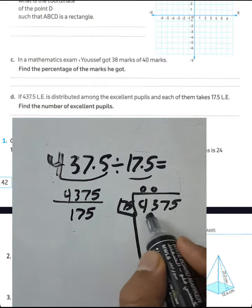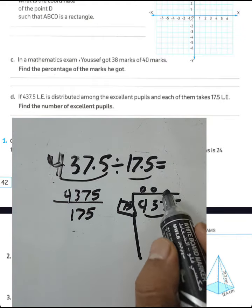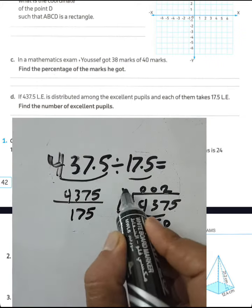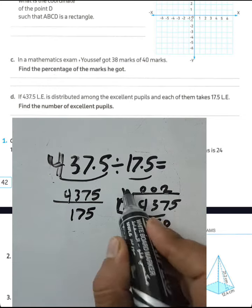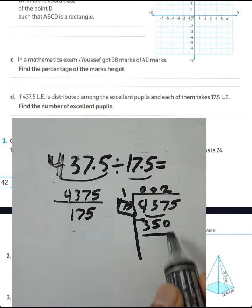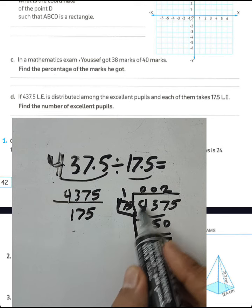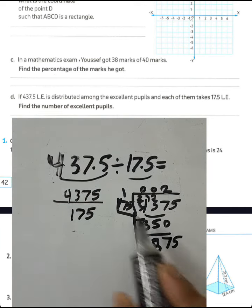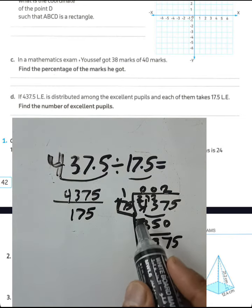Write double zero, and then you can write here 2. 2 times 5 equals 10, 0 and carry 1. 2 times 7 is 14 plus 1 equals 15, 5 and carry 1. 2 times 1 equals 2 plus 1 equals 3. Find the difference: 7 minus 0 equals 7, 13 minus 5 equals 8, and drop 5. 875 divided by 175, it will be 5.